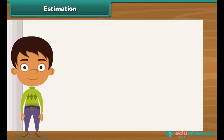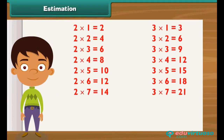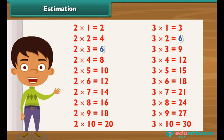Estimation. Which number falls between 5 and 10 and is divisible by both 2 and 3? Recall the tables of 2 and 3. The number that appears in both is 6, and 6 falls between 5 and 10. So, 6 is the number that can be divided by both 2 and 3.